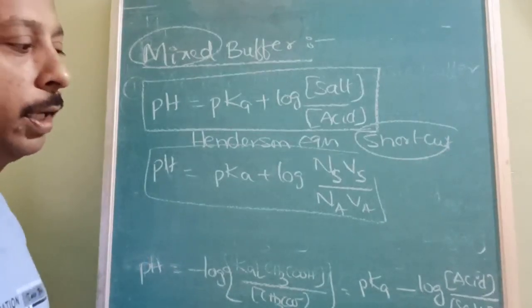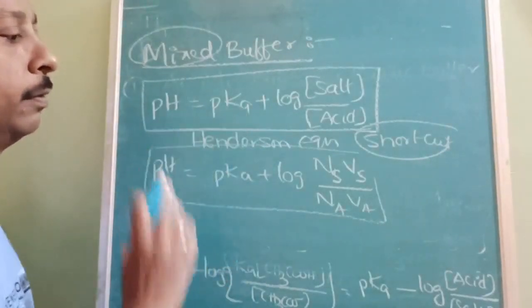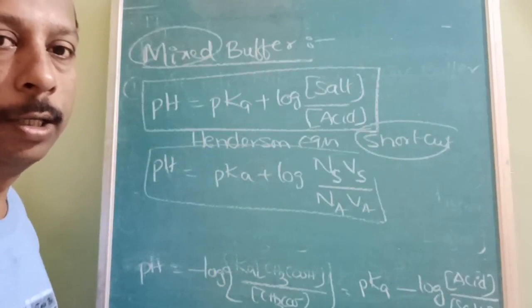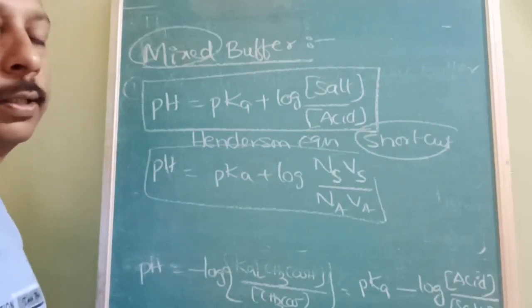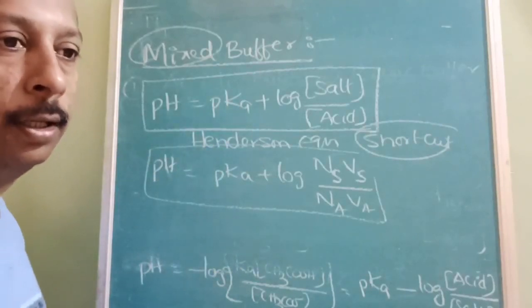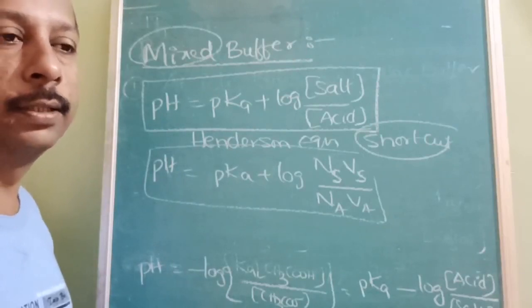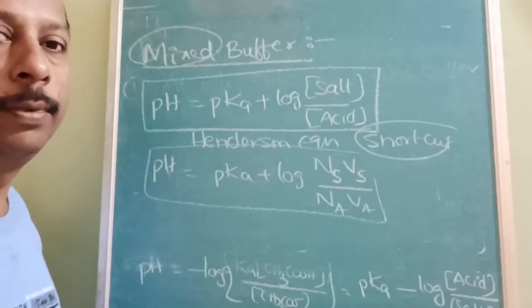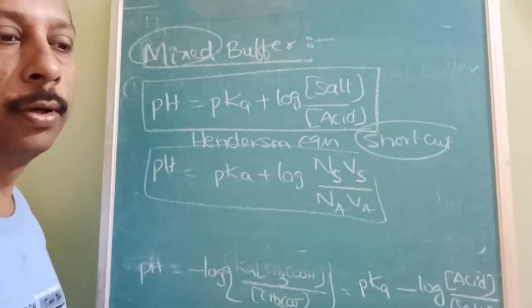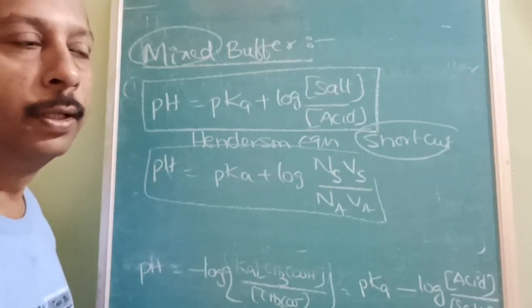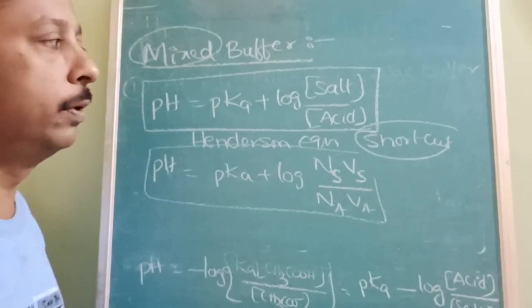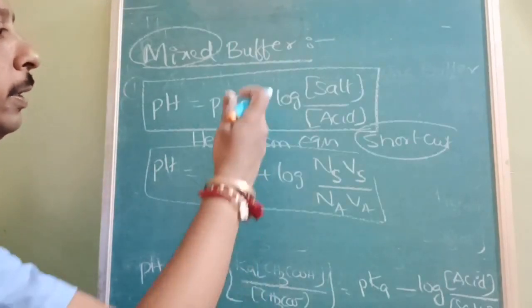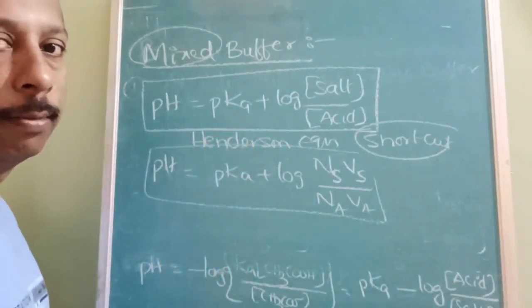So this is the shortcut formula for the acidic buffer. Buffer action — how it is able to resist change in pH — is because of the weak acid. If you add acid, as it is a weak acid it will not go much in the forward direction. If you add base, the base will be absorbed by the salt, so the salt is not going to change the pH by going in the backward direction. That's why there is not much change in pH — that is what is called buffer action.